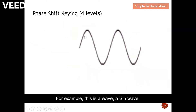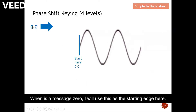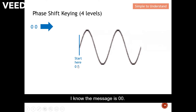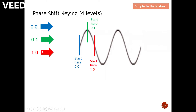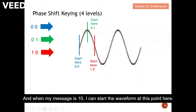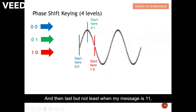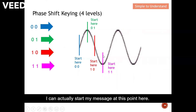Consider a sine wave. When the message is 00, I use a starting point at 0° — when the waveform begins at zero degrees, I know the message is 00. When the message is 01, I start the waveform at 90°. When the message is 10, I start the waveform at 180°. And when the message is 11, I start the waveform at 270°.